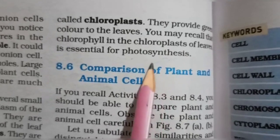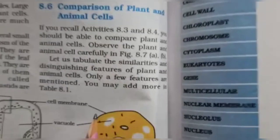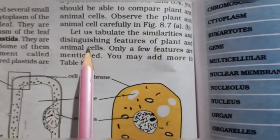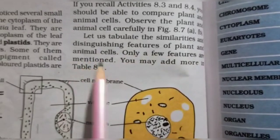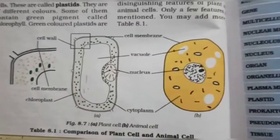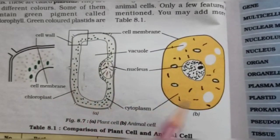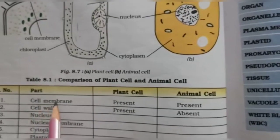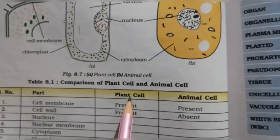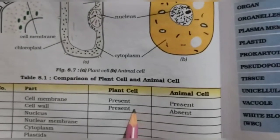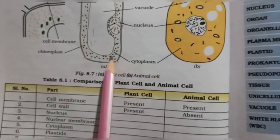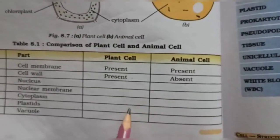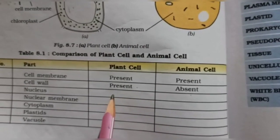Our last topic is the comparison of plant and animal cells. Let us tabulate the similarities and distinguishing features of plant and animal cells. For example, cell membrane is present in both. Cell wall is only in plant cells because plants need protection, while animals do not. You need to fill up this comparison table as homework. This completes our chapter 8. We will continue with the next chapter in the next video. Thank you.